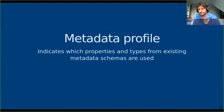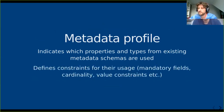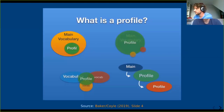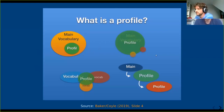Let's recap what a metadata profile actually does before diving into a specific profile. It's basically a definition of how existing vocabularies or metadata schemas are reused in an application or community, by indicating which properties and types from these existing schemas are used and what constraints exist for their usage — like mandatory fields, cardinality, value constraints, etc. Tom Baker and Karen Coyle at SWIB 19 nicely illustrated the different ways a profile can reuse existing profiles: it might be a subset of a main vocabulary, or use a main vocabulary plus others, or take subsets of different vocabularies.